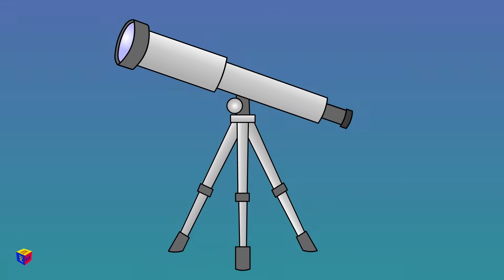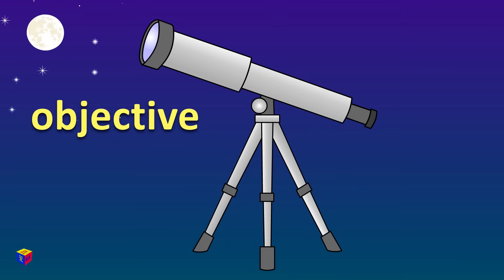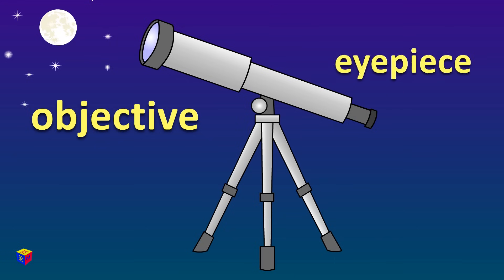The telescope has an objective. This is the part that is pointing at astronomical objects such as the sun, the moon, the stars, and other celestial bodies. On the other end is the eyepiece, which is what we look into.